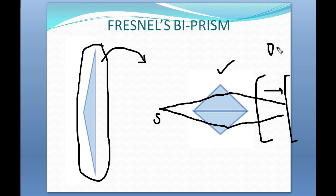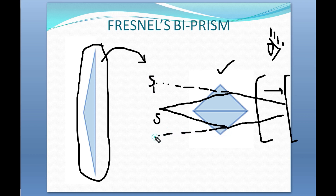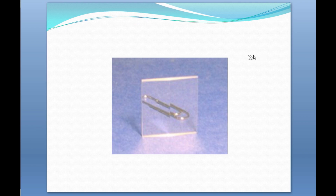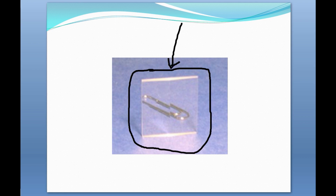The person watching on this side feels that this ray is coming from S1 and this ray is coming from S2. This means S1 and S2 are the virtual images of the source S. This is what a real Fresnel's biprism looks like, and this prism is used in an experiment to determine the wavelength of monochromatic light.